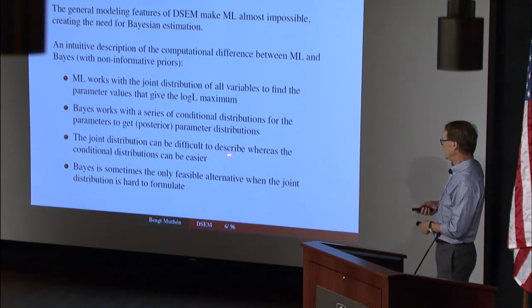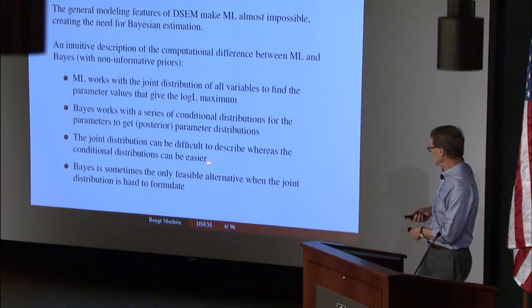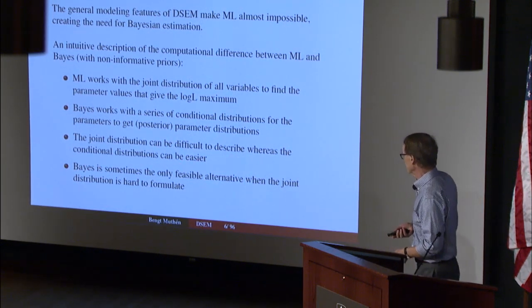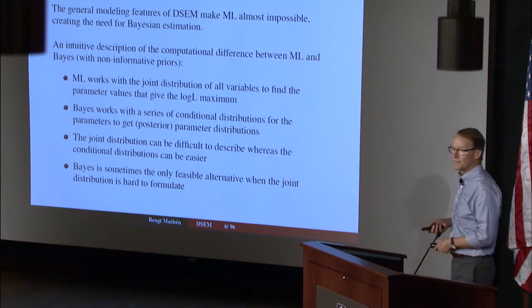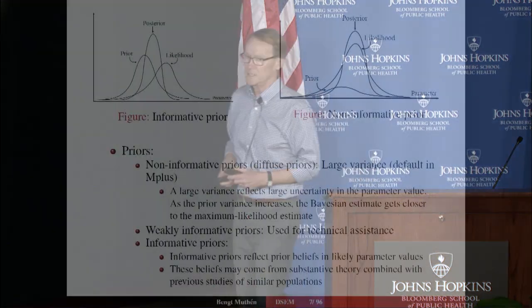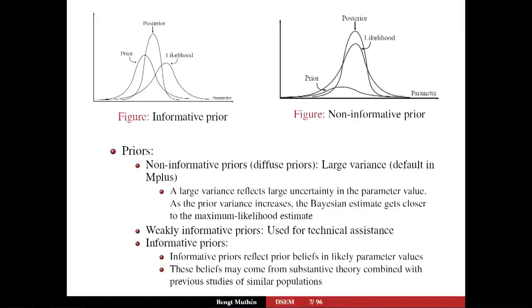The joint distribution can be difficult; conditional distributions can be easier. That's the main reason. Now, what are we talking about when we talk about priors? The default of M+ is non-informative priors. But let me first tell you what informative priors are.